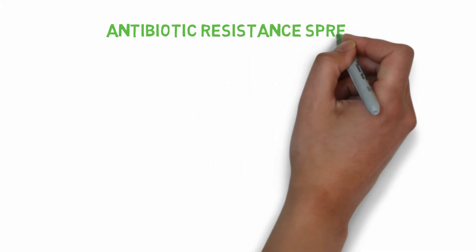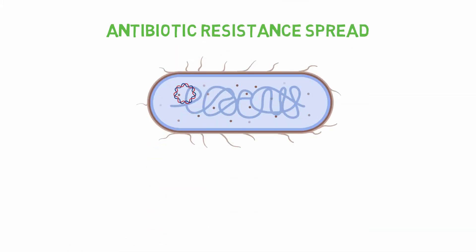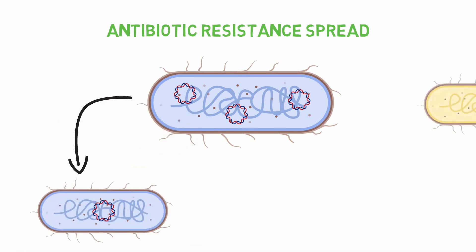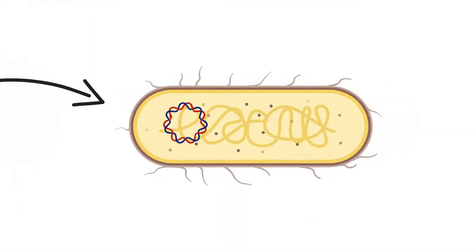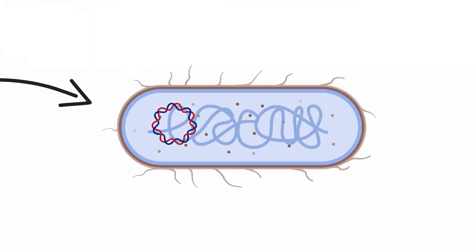Bacteria can easily spread their resistance thanks to mobile elements called plasmids, which are transferred not only to daughter cells during replication, but also to neighboring bacterial cells via horizontal transfer. This is why antibiotic resistance is continuously growing.